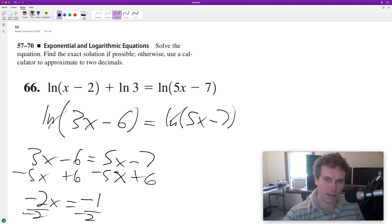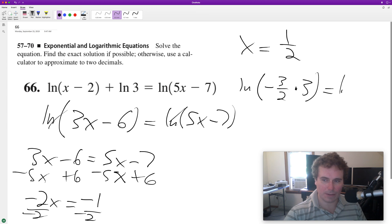When we plug this in, we'll have natural log of one half minus two, which gives us negative three halves, and then we multiply that times three. Then natural log of five halves because five times one half minus seven.